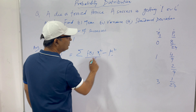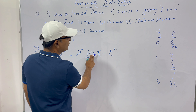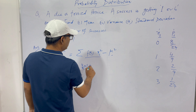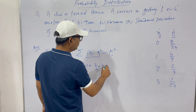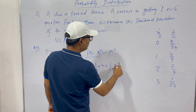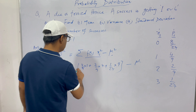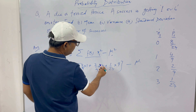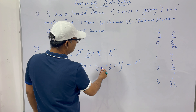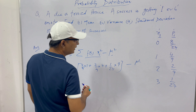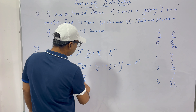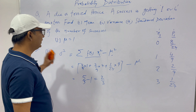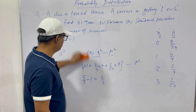The X = 0 term drops out. So: Σ Pi × Xi² = (4/9 × 1²) + (2/9 × 2²) + (1/27 × 3²) = 4/9 + 8/9 + 9/27 = 4/9 + 8/9 + 3/9 = 15/9 = 5/3. Therefore, Variance = 5/3 − 1 = 5/3 − 3/3 = 2/3. The variance is 2/3.